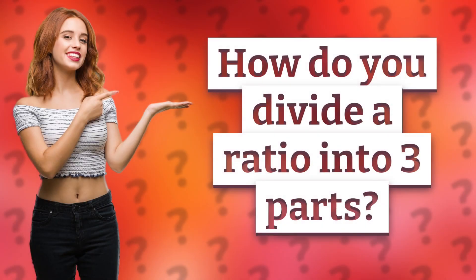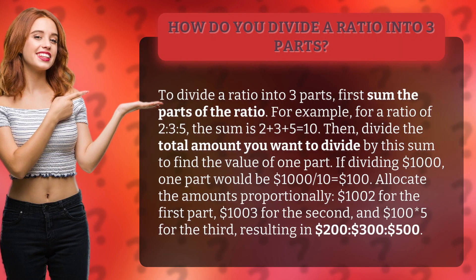How do you divide a ratio into three parts? To divide a ratio into three parts, first sum the parts of the ratio.